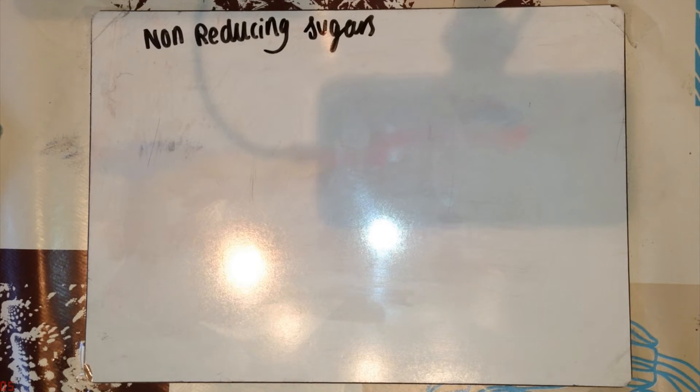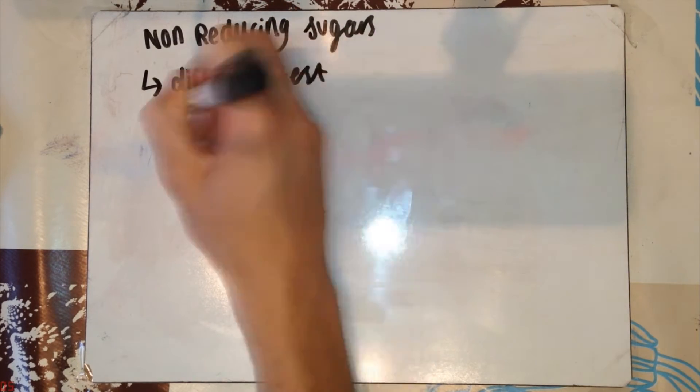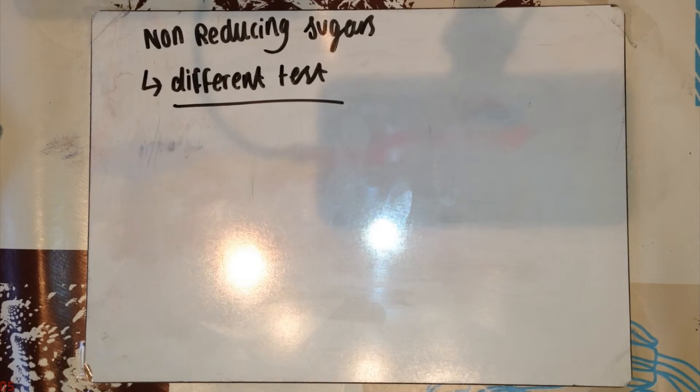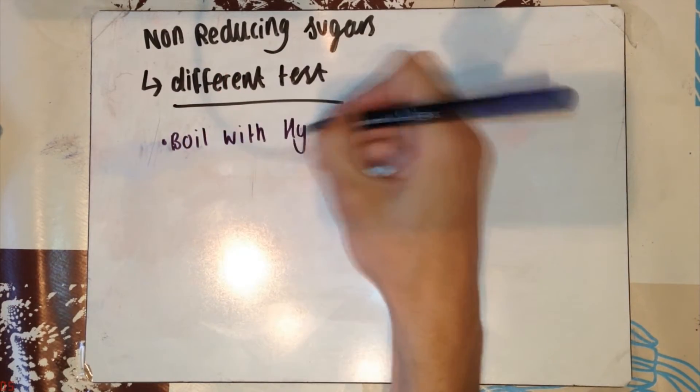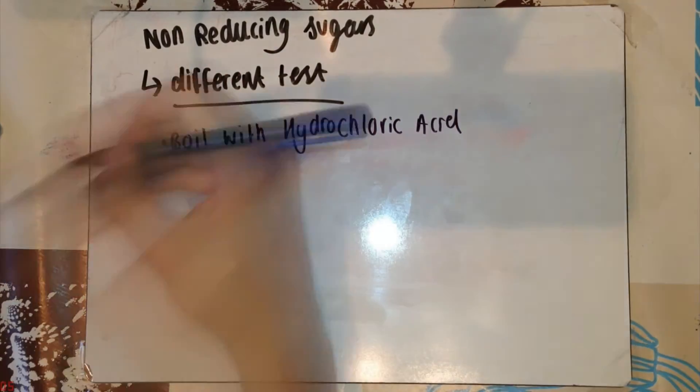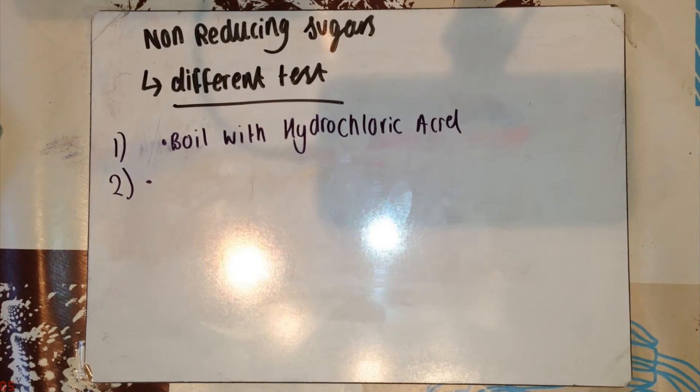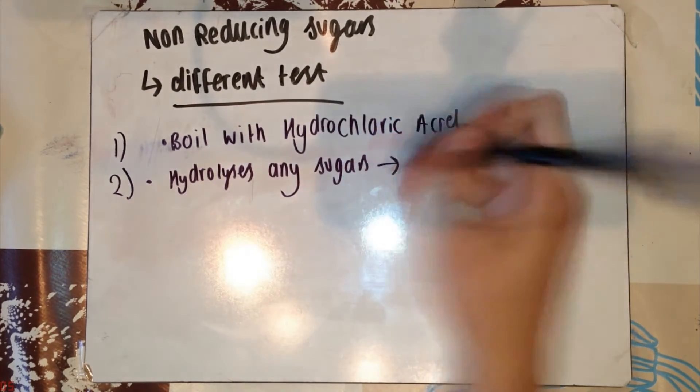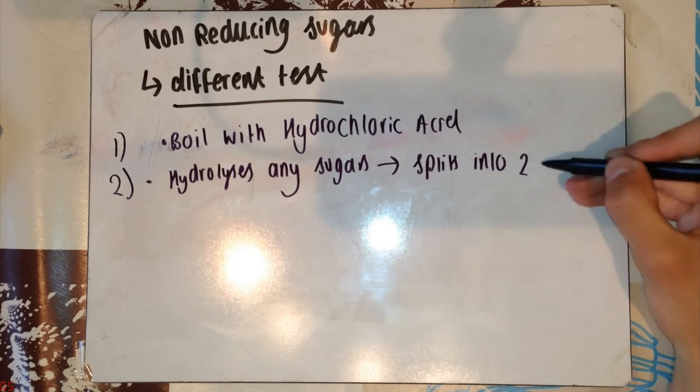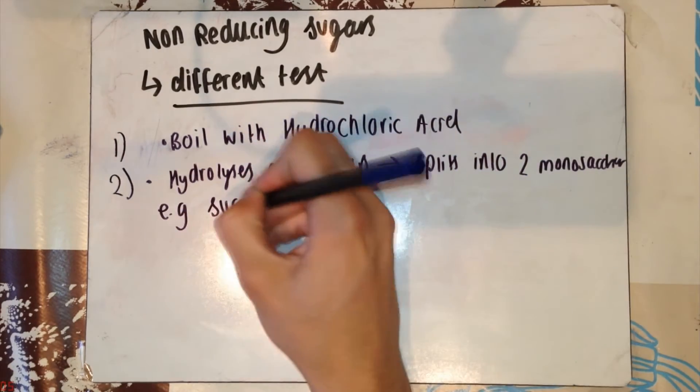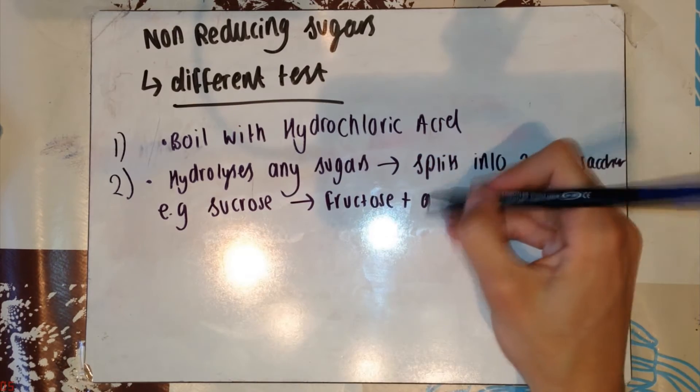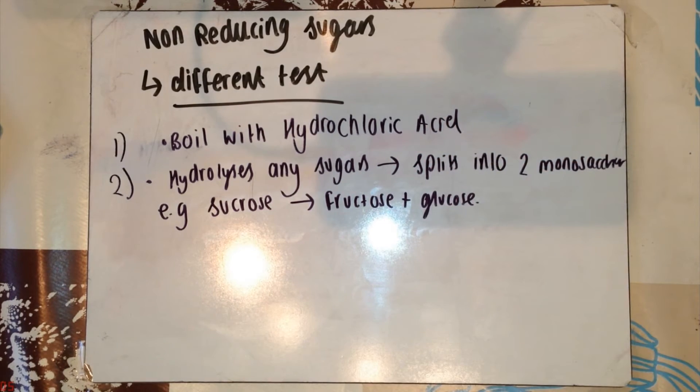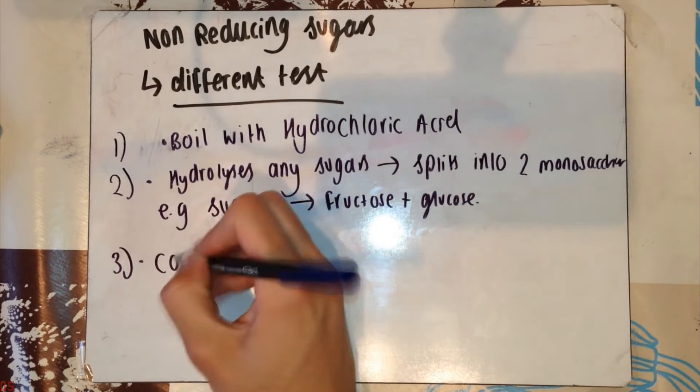What about non-reducing sugars? This is a different test. So, if your test results come back negative and says this is a non-reducing sugar, there is another way you can do it. Boil this sugar with hydrochloric acid. This will hydrolyse any sugars present. For example, sucrose is a non-reducing sugar. However, it's made of fructose and glucose, which are both reducing sugars. This will split sucrose into the fructose and the glucose molecules.